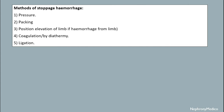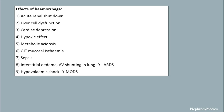Methods of stoppage of hemorrhage include pressure, packing, position (which includes elevation of the limb if hemorrhage is from the limb), coagulation by diathermy, and ligation. Effects of hemorrhage include acute renal shutdown, liver cell dysfunction, cardiac depression, hypothalamic effect, metabolic acidosis, GIT mucosal ischemia, and sepsis.